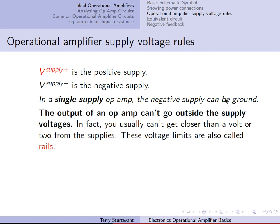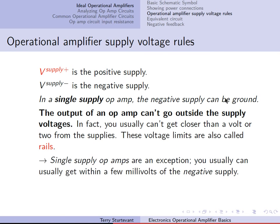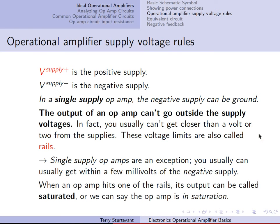These voltage limits are also called the rails. Single supply op-amps are an exception — you can usually get within a few millivolts of the negative supply on a single supply op-amp, since the negative supply can be ground. When an op-amp output hits one of the rails, the output is called saturated, or we can say the op-amp is in saturation.